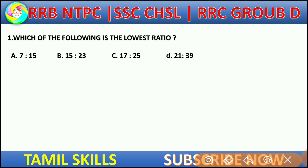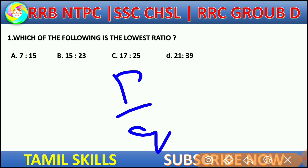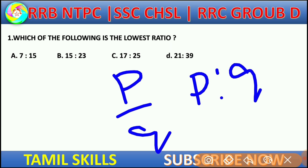Which of the following is the lowest ratio? So here we are looking for the lowest ratio. The lowest ratio is P by Q, that is P is to Q. If A by B equals P by Q, that is the exact meaning of a ratio.